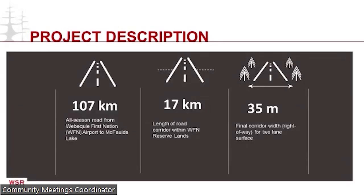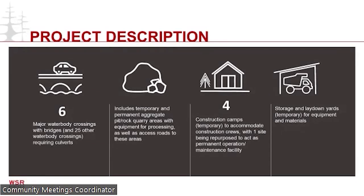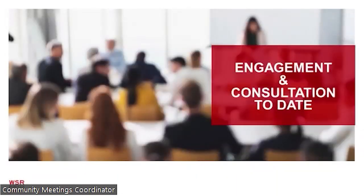The planned road will be 107 kilometers long, with 17 kilometers on the Webequay First Nation reserve lands. The corridor planning area is 2 kilometers wide, but the actual cleared area will be 35 meters wide. The road will make 6 major water crossings, and will include temporary pits, quarries, equipment storage areas, and 4 construction camps.